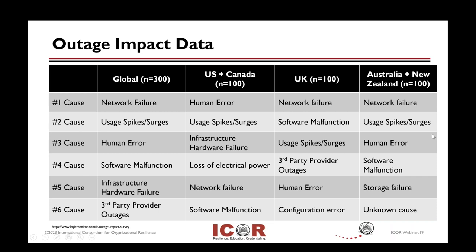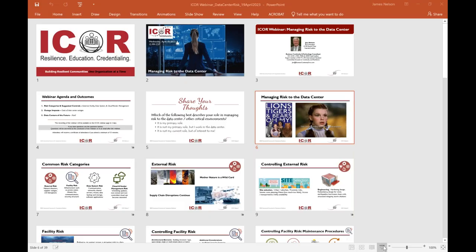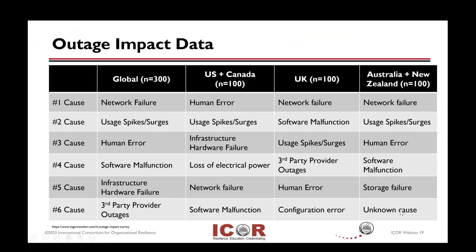These are example data from Logic Monitor, looking at causes of data center outages over time. Sampling some of the key causes: network failure and human error are pretty common, as are usage spikes or surges, software problems, loss of power, and third-party providers. These represent some of the key outage causes and impacts studied on a global basis.